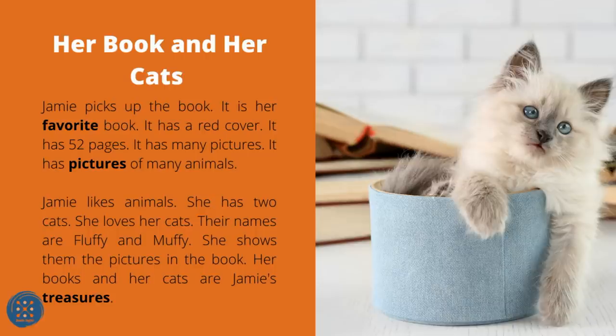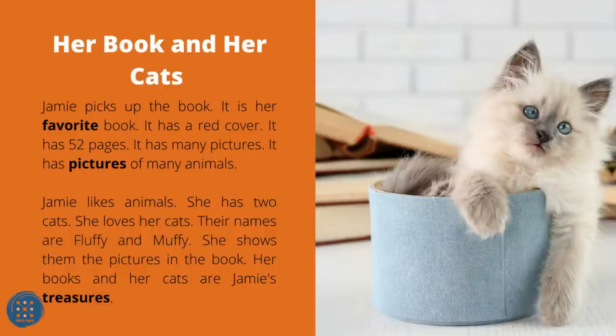Her Book and Her Cats. Jamie picks up the book — it is her favorite book. It has a red cover, 52 pages, and many pictures. It has pictures of many animals. Jamie likes animals. She has two cats and loves them. Their names are Fluffy and Muffy. She shows them the pictures in the book. Her books and her cats are Jamie's treasures.